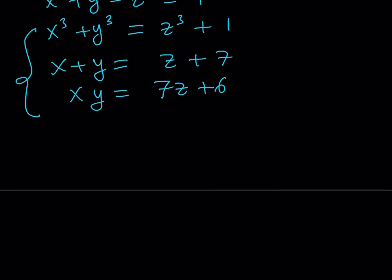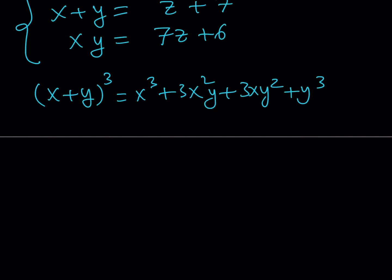Now, what can I do with the x plus y and the xy? If you think about x plus y quantity cubed, this is an identity that I always use, but let me go ahead and explain that real quick. If you start off with x plus y and cube it, you get x cubed plus 3x squared y plus 3xy squared plus y cubed. Now, this is from binomial theorem, but I would like to write it in a nicer way.